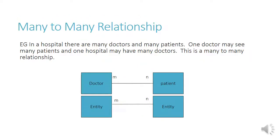Many-to-many relationship. In a hospital there are many doctors and many patients. One doctor can see many patients, but the hospital can have many doctors, and one patient can be seen by many doctors. So this is a many-to-many relationship.